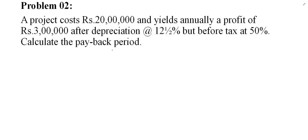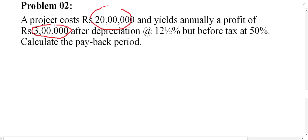As mentioned in chapter two and at the beginning of this chapter, to calculate the payback period — and all methods except ARR or accounting rate of return — the profitability should be profit after tax but before depreciation. In this case, the cost of the project is 20 lakh and profitability is 3 lakh per year, but this is after depreciation of 12.5% and before tax of 50%. So we need to make some adjustment.